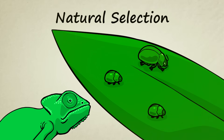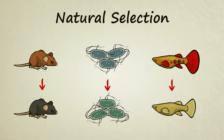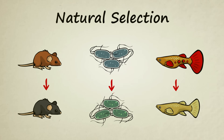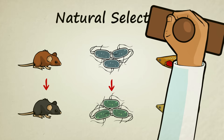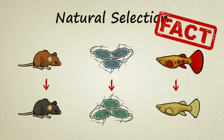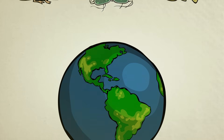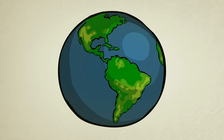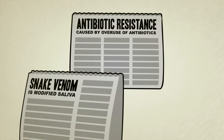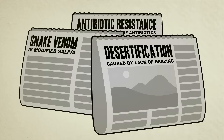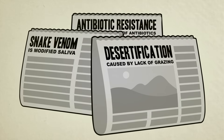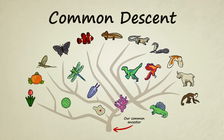Since Darwin first put forth his idea in the mid-1800s, natural selection has been studied and witnessed numerous times in nature and in the science lab. What started out as a mere idea is now officially an observable fact. Darwin's discovery has greatly expanded our understanding of the natural world, it's led to countless new breakthroughs, and it finally allowed scientists to seriously consider the idea of common descent.